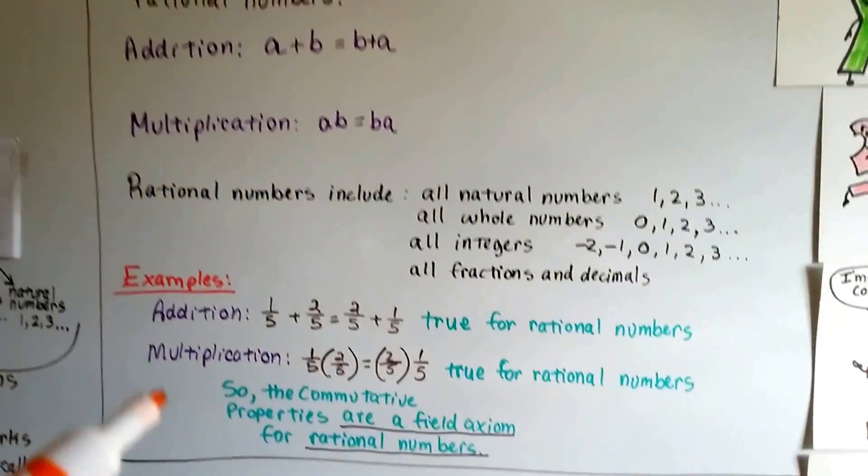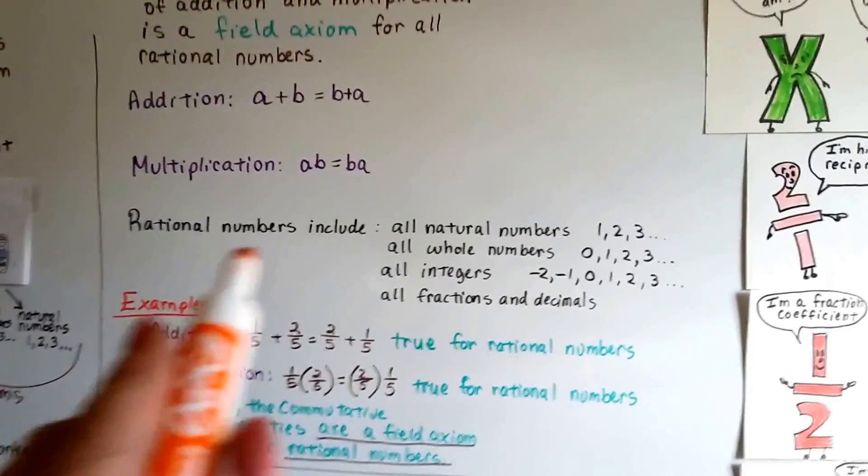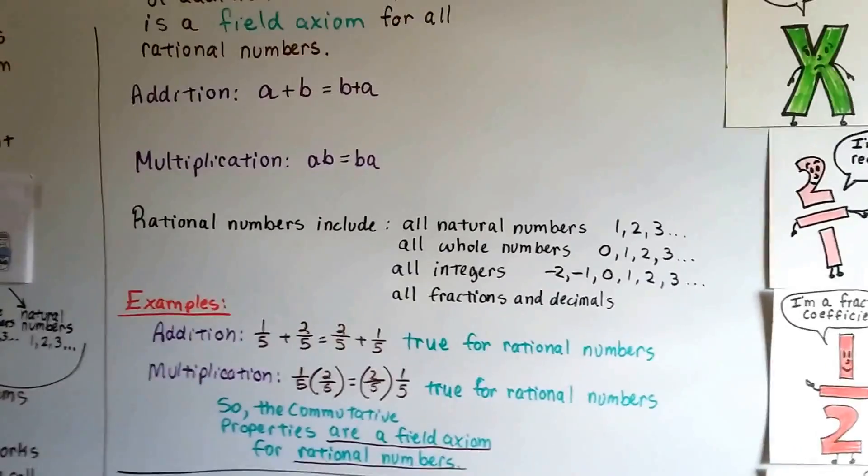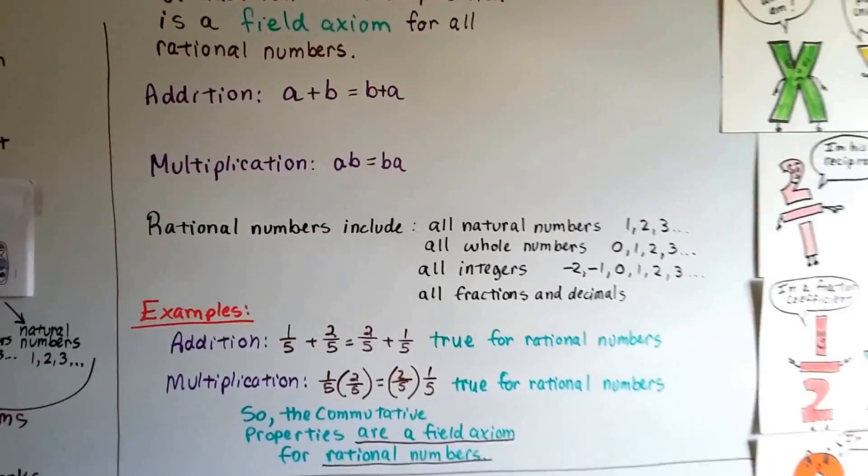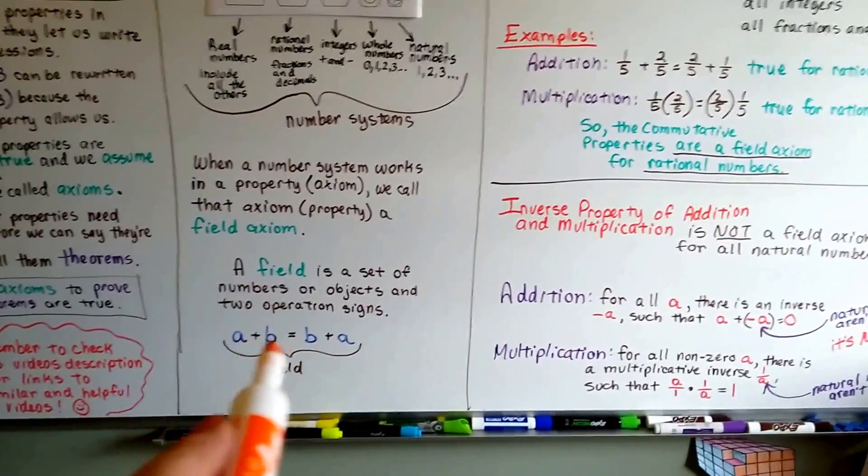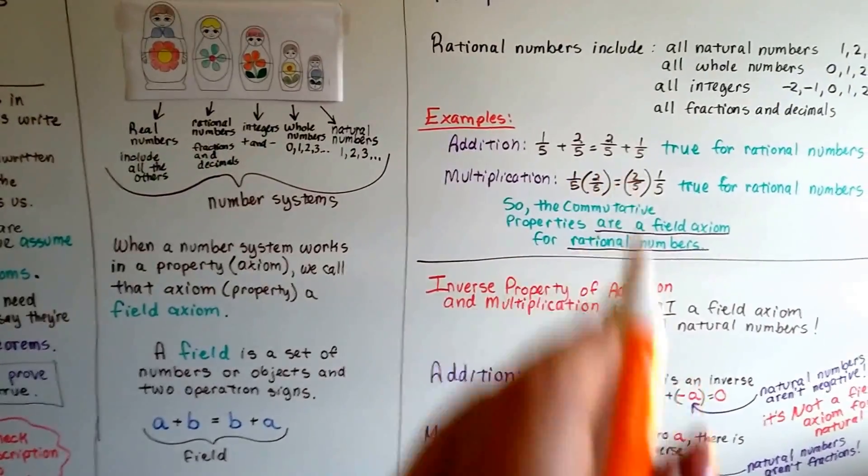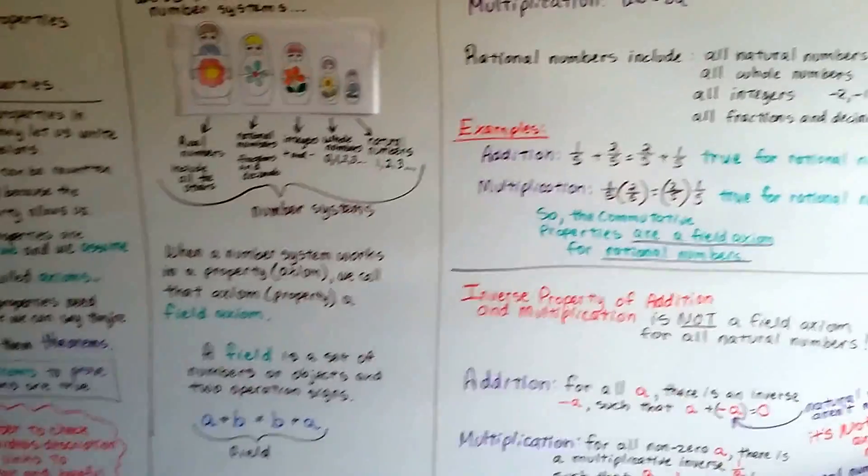And the commutative property of addition and multiplication is a field axiom for rational numbers because it is true and it does work. So do you see what a field axiom is? And the field is a set of numbers or objects and two operation signs, see, plus, plus, or multiplication, multiplication, that makes the field, see?